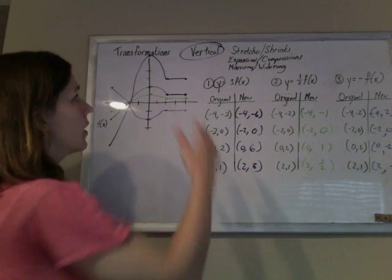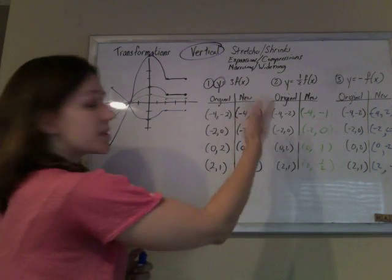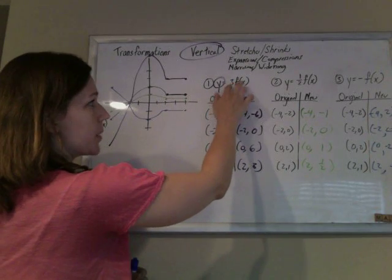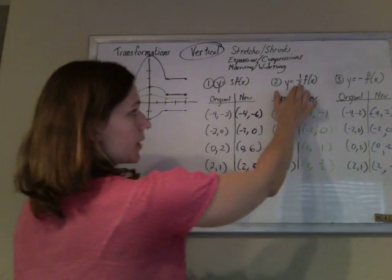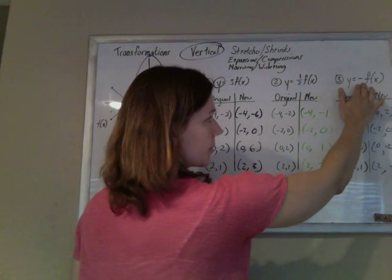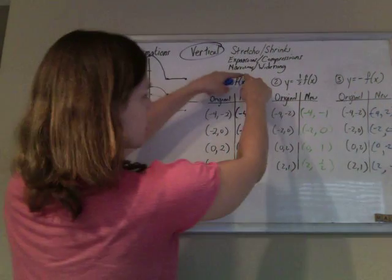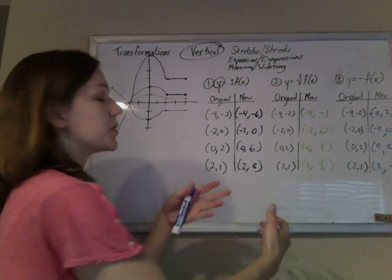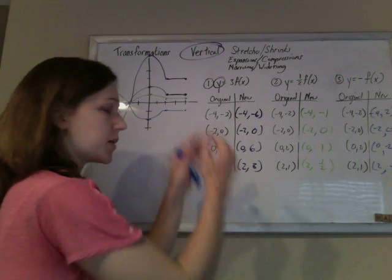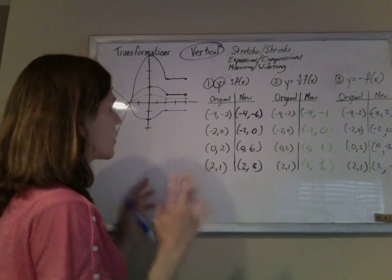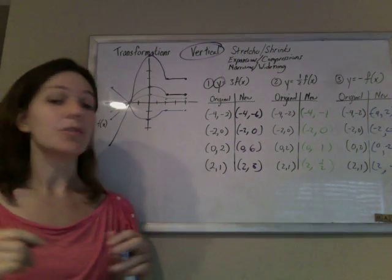So, in summary, anything that's on the outside affects the y's just like it looks. I'm going to multiply the y values by 3. I'm going to multiply the y values by a half. I'm going to multiply the y values by a negative 1. In the next video, it's going to be grouped in with the x's, and it's going to affect the x's, and it's going to do the opposite of what you expect. When it's grouped in like that, you're going to have to undo it. So, let's pause here and do some more.